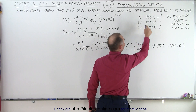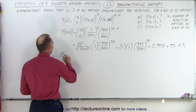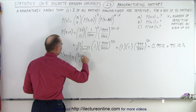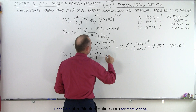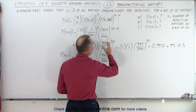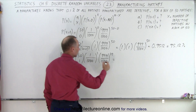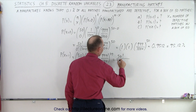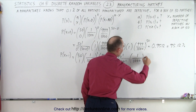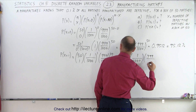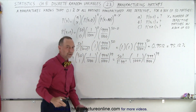Now let's calculate the case where there is one defective match. The probability that x equals one: we have 50-choose-1 times one over a thousand raised to the first power, times 999 over a thousand raised to the 49th power. That gives us 50 factorial divided by 1 factorial times 49 factorial, multiplied by 1 over 1000, times 999 over a thousand raised to the 49th power.